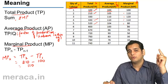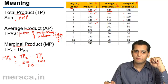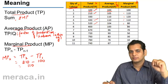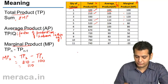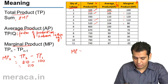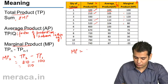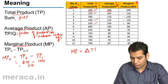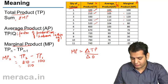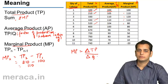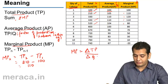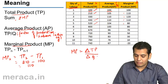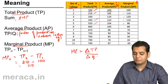There is one more formula to find Marginal Product: Marginal Product equals the change in Total Product divided by the change in Q (delta TP / delta Q). Let's see how we calculate Marginal Product using this formula.